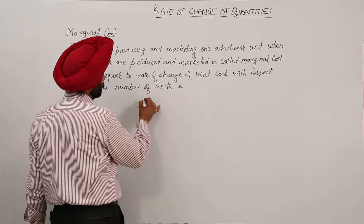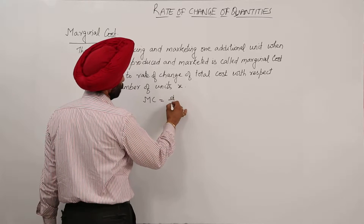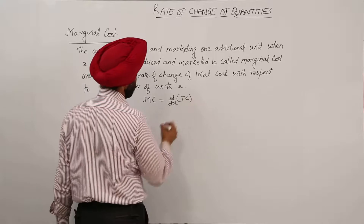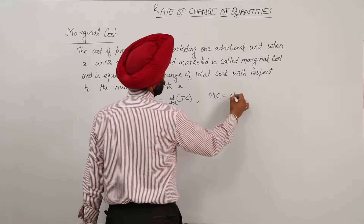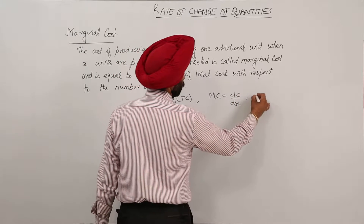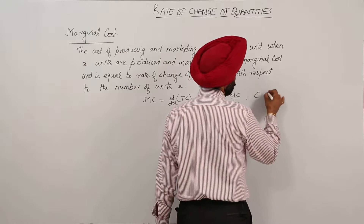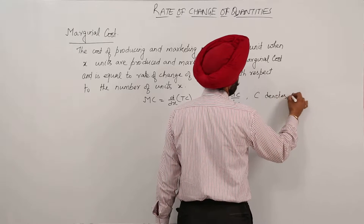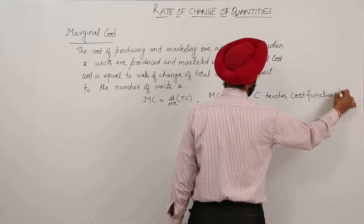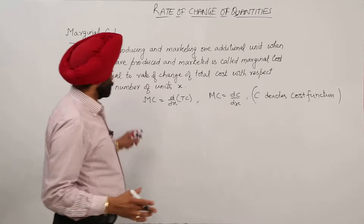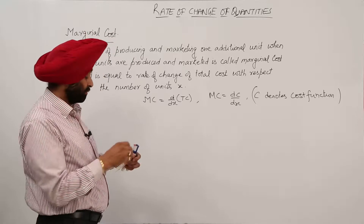For the marginal cost we can write: Marginal cost is equal to d by dx of total cost. Or we can write it as marginal cost is equal to dC by dx, where C is the cost function. So the derivative of the total cost is called the marginal cost.